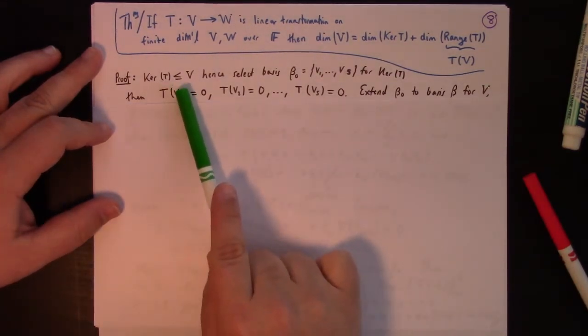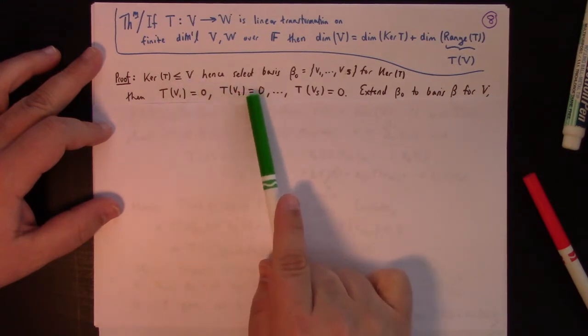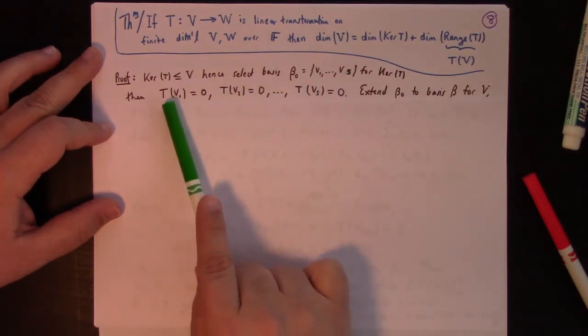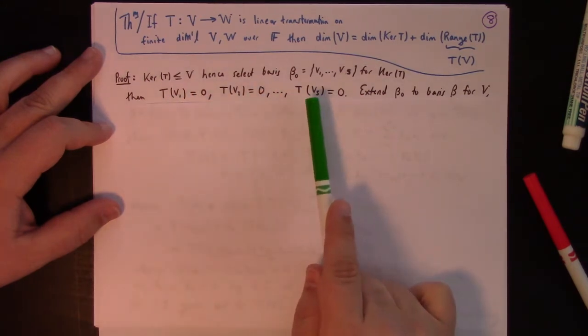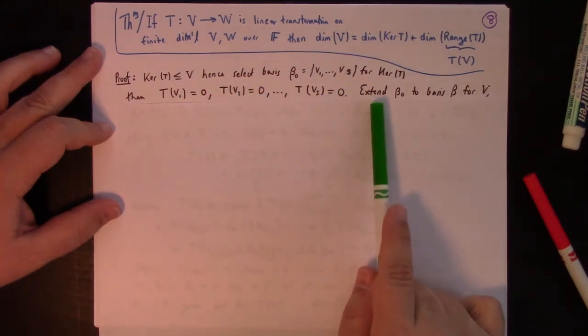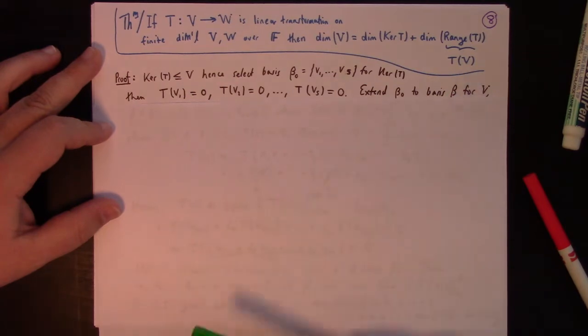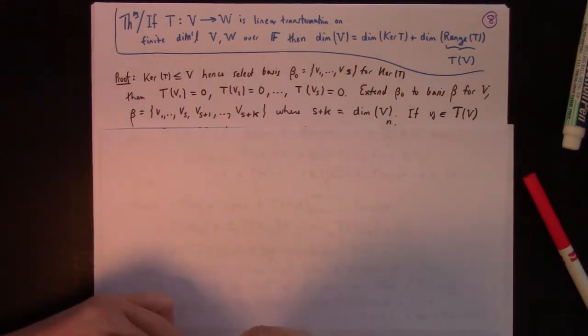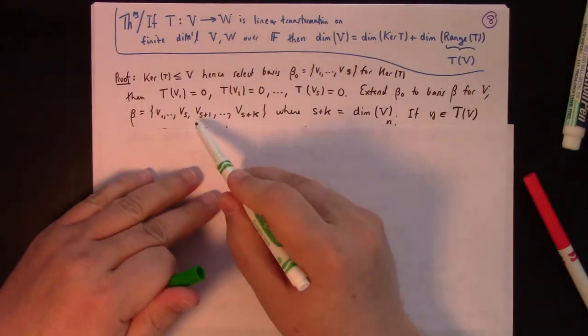And I say linear algebraic because it involves the consideration of bases and extension of bases and just working with those directly. So, starting point, the kernel is a subspace of V. That means we can select a basis for it, say V1 through Vs. And by definition, T of V1 through T of Vs is 0. All right, then you take that basis, extend it to a basis beta for V. So here we're going to add in the vectors Vs plus 1 through Vs plus k.